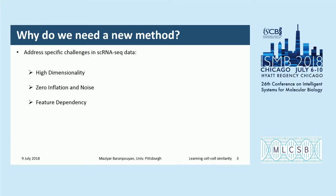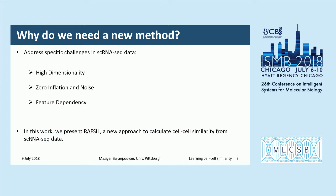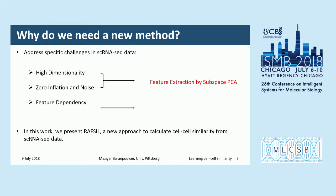To calculate cell-to-cell similarity properly for single-cell RNA sequencing data, we need to consider three important challenges: high dimensionality of data, zero inflation, and feature dependency. We present RAFSIL — random forest-based similarity learning — a new approach to calculate cell-to-cell similarity. RAFSIL overcomes the first two challenges by applying feature extraction using subspace principal component analysis, and takes into account the last challenge using similarity learning by random forest. Feature dependency is one of the most important factors that similarity metrics like Euclidean distance, Spearman, or other correlations don't consider.